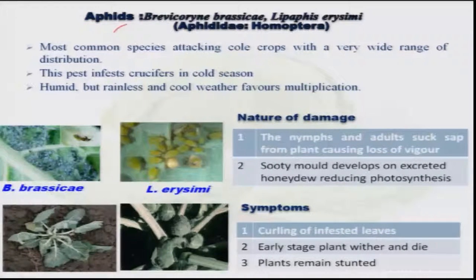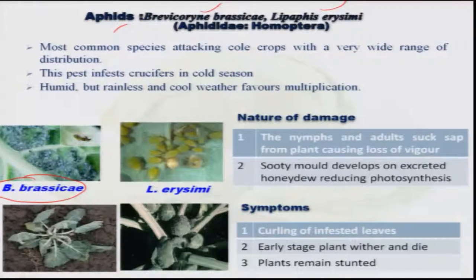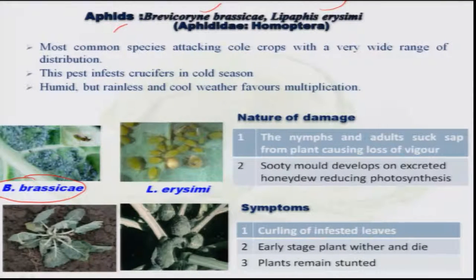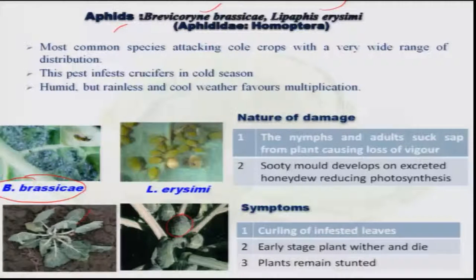There are two species of aphids — Brevicoryne brassicae and Lipaphis erysimi — among which Brevicoryne brassicae is quite serious. Both adults and nymphs are the damaging stage; they congregate at the base of the leaves with their bodies covered by a white waxy coating and suck sap from the leaves. Continuous sucking leads to discoloration, drooping, and ultimately withering of the leaves. High populations secrete honeydew, promoting sooty mold growth that affects the plant's photosynthetic activity.